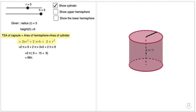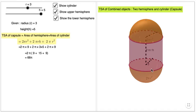The first is the cylinder, with surface area 2πrh. The upper hemisphere surface area is 2πr², and the lower hemisphere is another 2πr². If you add all three, you get the total surface area of these combined objects.